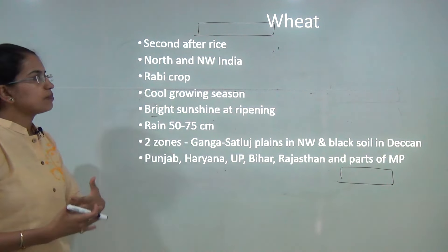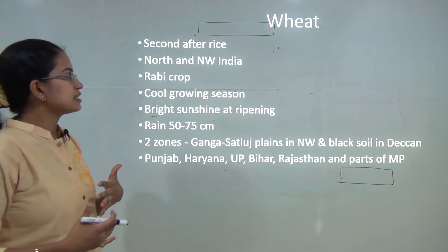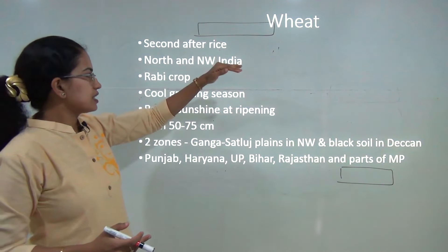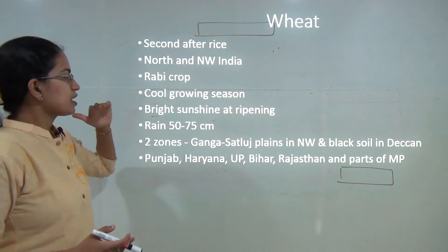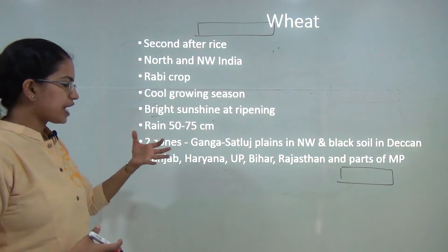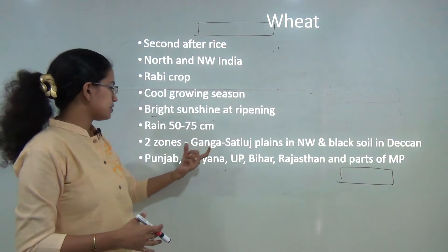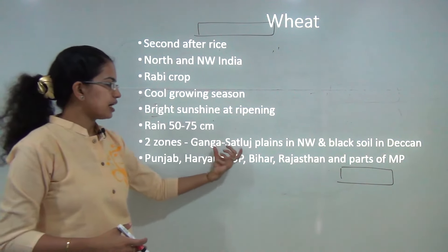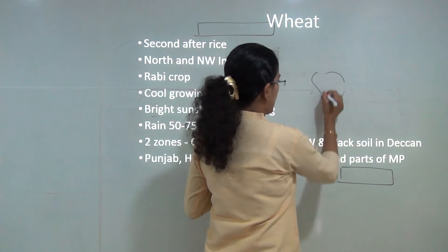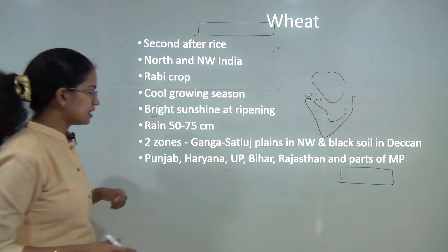Wheat cultivation is a Rabi crop and comes next to rice in terms of production. The north and northwest of India have wheat cultivation in the cold growing season. It requires the right amount of sunshine when ripening, and moderate rainfall of 50 to 75 centimeters. There are two zones: the Ganga-Sutlej plains in the northwest and the black soils in the Deccan area.